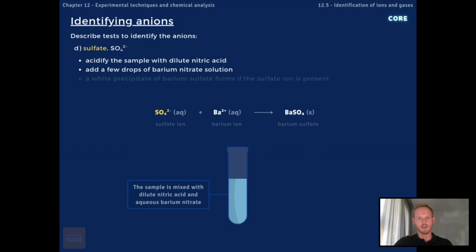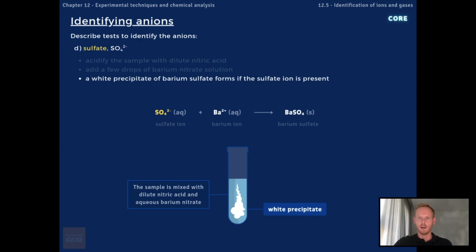To test for the presence of sulfate ions, SO4²⁻, acidify the sample with dilute nitric acid and then add a few drops of aqueous barium nitrate. Sulfate anions react with barium cations from barium nitrate to form a solid white precipitate of barium sulfate.